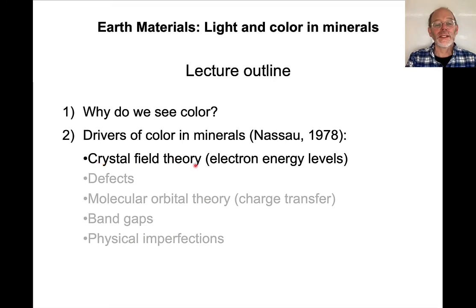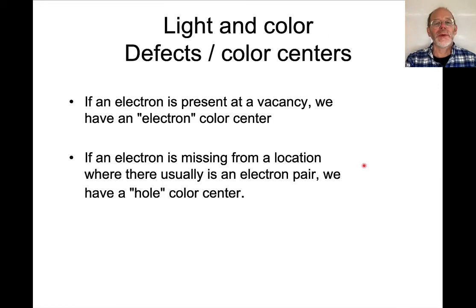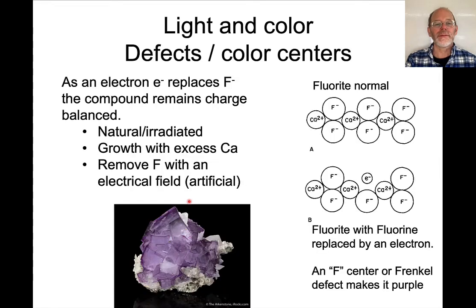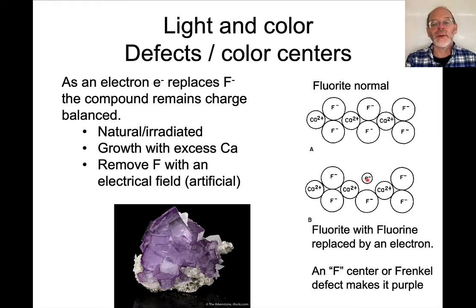That summarizes crystal field theory with electron energy levels. Next, defects. There are many different kinds of defects, but here we're talking about either an electron present where it normally isn't, or an electron missing where it usually is. If it's present, we call that a color center; if it's missing, we call that a hole color center. In fluorite, purple color commonly occurs when a fluorine ion is missing and has been replaced by an electron, giving it unusual energy states capable of absorbing or fluorescing light — this is called an F-center, or Frenkel defect.